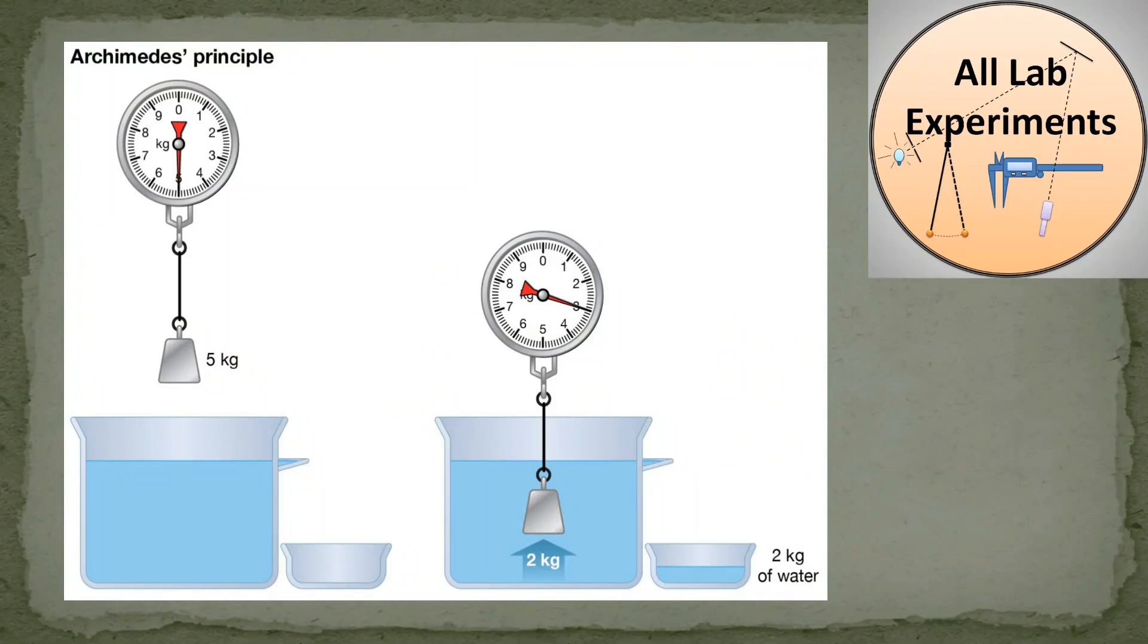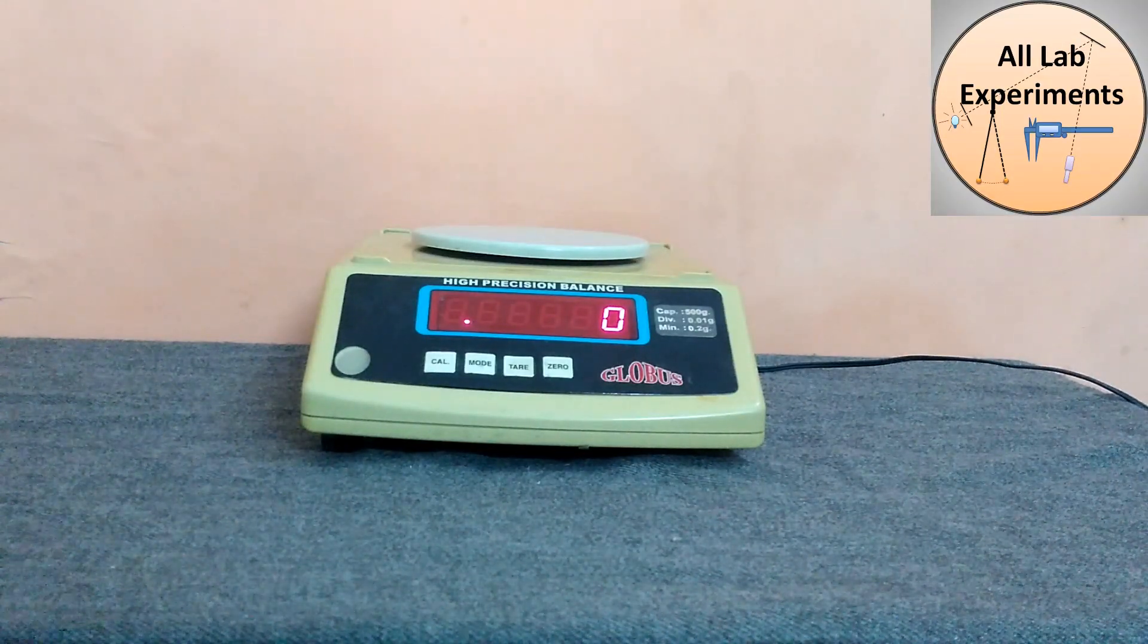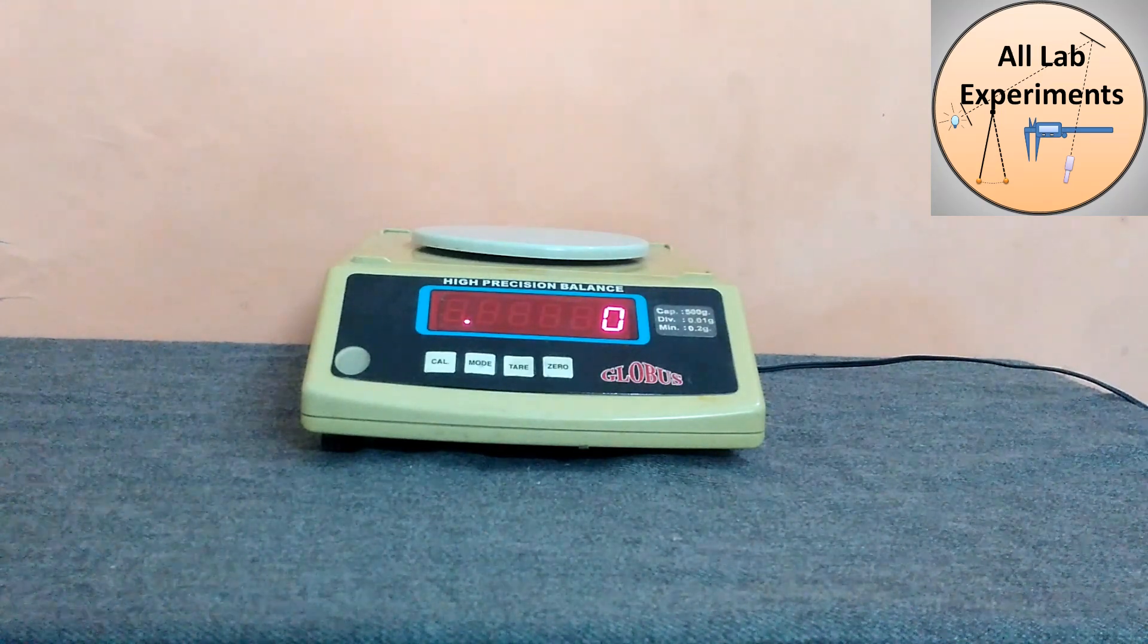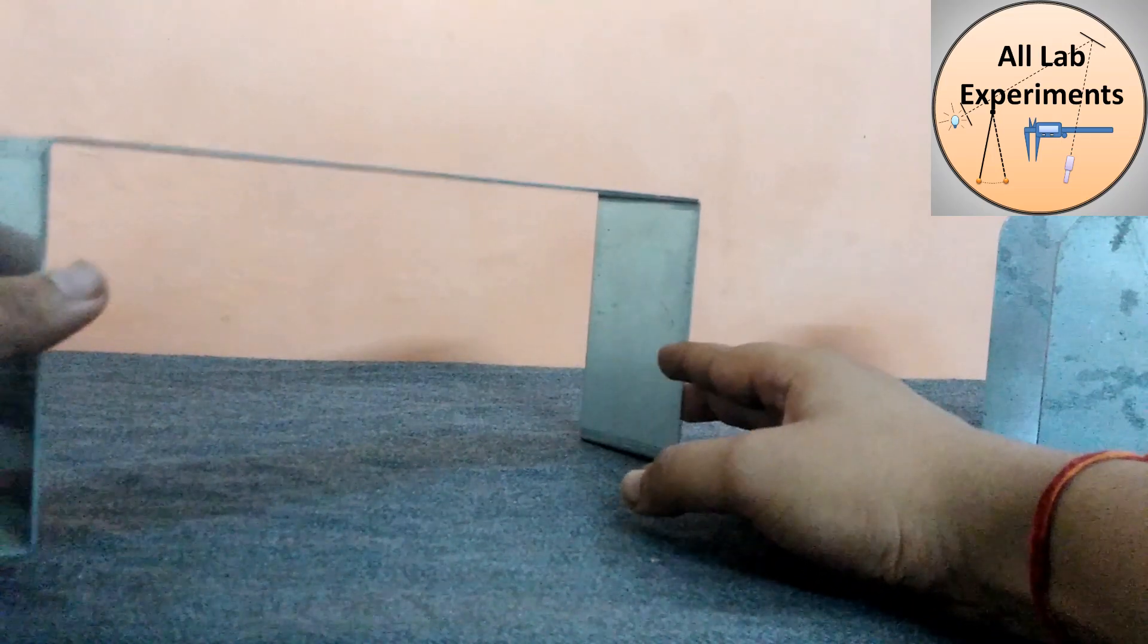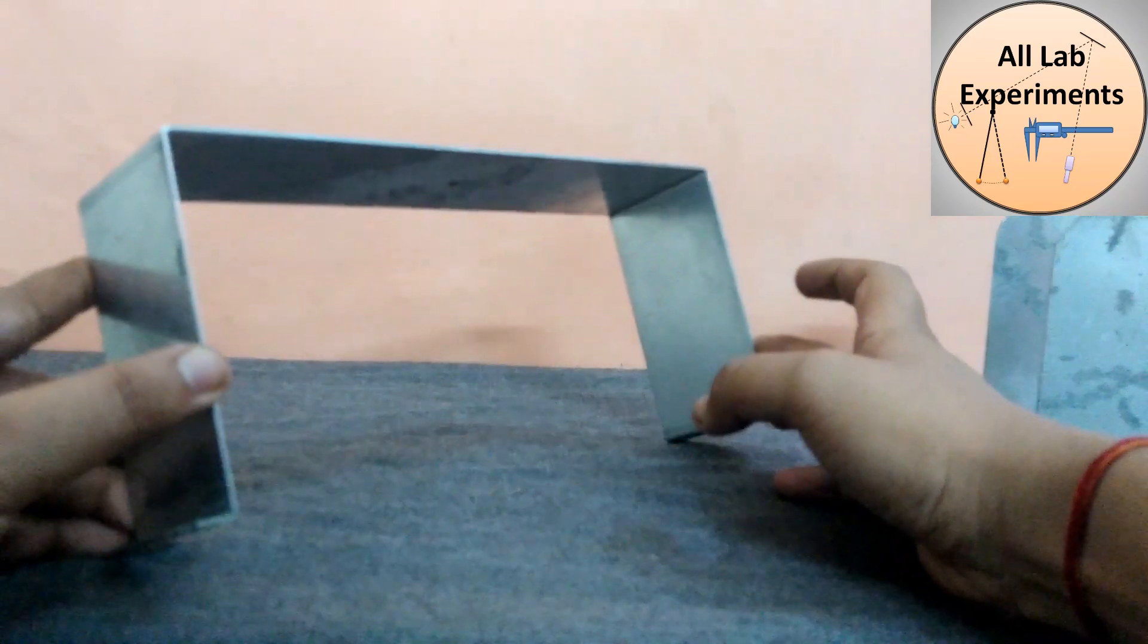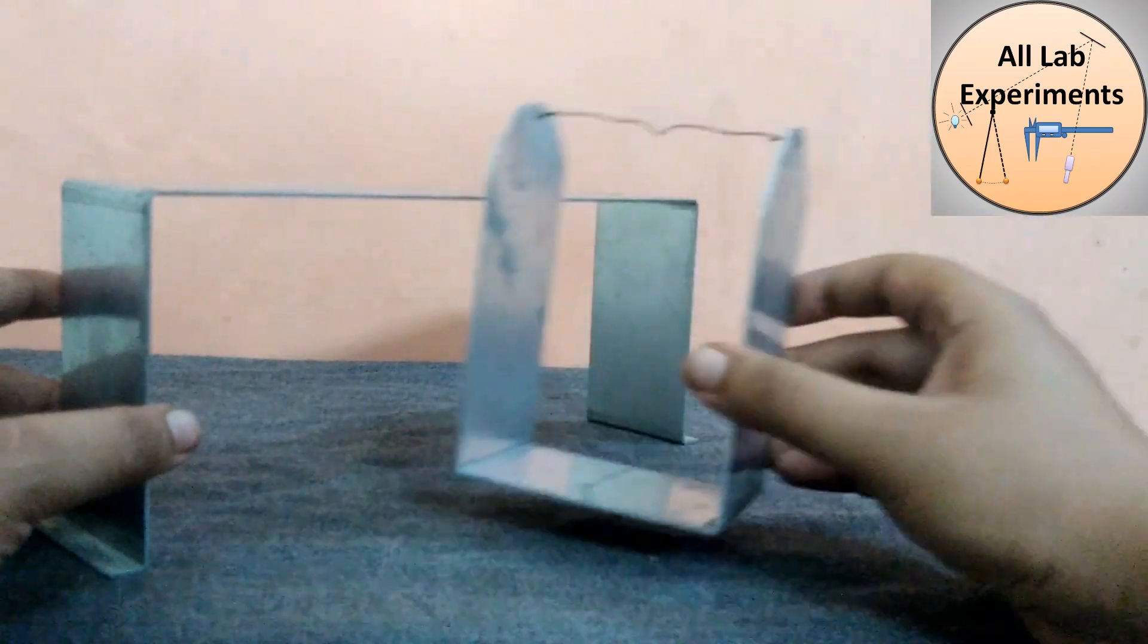Now we come to the Archimedes method to measure the density of an irregular body. The first thing we need to measure the density of a material is a measuring balance.